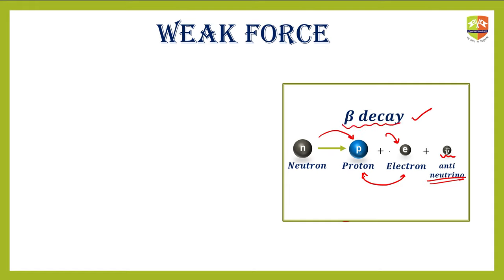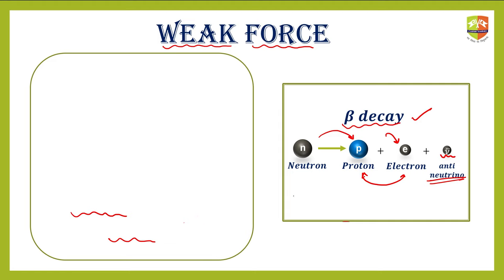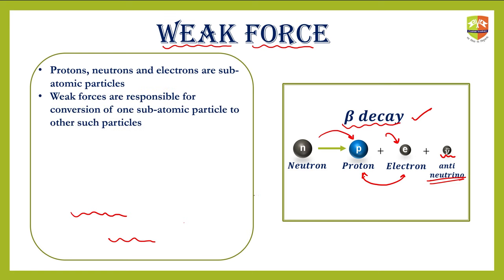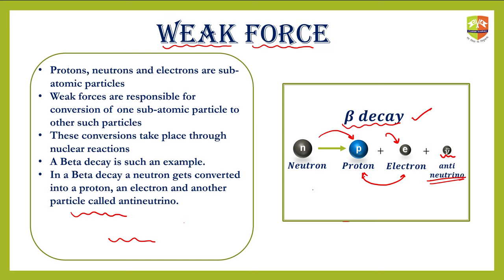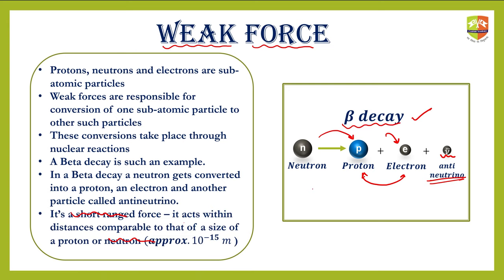This process is called beta decay. When you study atomic structure in chemistry and physics, you will understand what this process is. For these types of conversions, we require something called weak force. Weak forces are responsible for the conversion of one subatomic particle to another. Protons, neutrons, and electrons are subatomic particles — meaning smaller than the atom. These conversions take place through nuclear reactions, and beta decay is such an example, where a neutron gets converted into a proton, an electron, and an anti-neutrino. It is a short-range force, acting within distances comparable to the size of a proton or neutron — approximately 10 to the power of minus 15 meters.